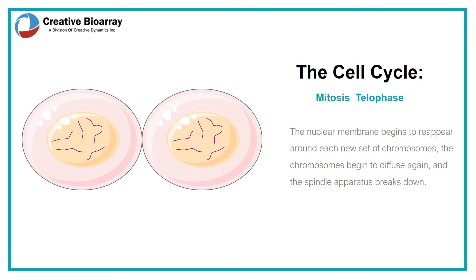The cell enters telophase, the last stage of mitosis. The nuclear membrane begins to reappear around each new set of chromosomes, the chromosomes begin to diffuse again, and the spindle apparatus breaks down.